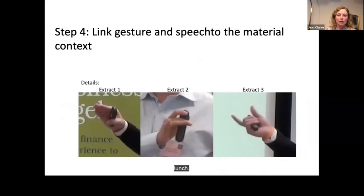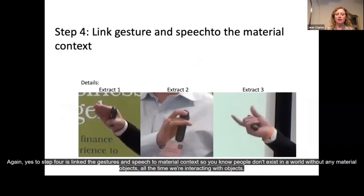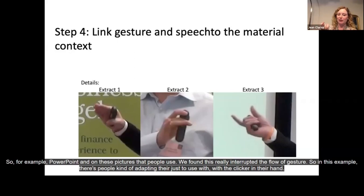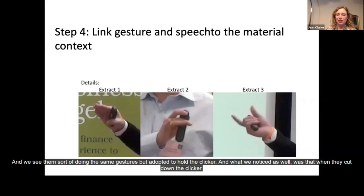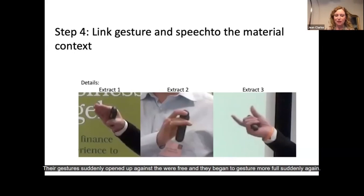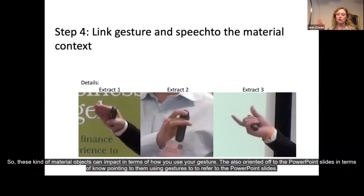Step four is to link the gestures and speech to material context. People don't exist in a world without material objects — we're always interacting with them. For example, PowerPoint clickers really interrupted the flow of gestures. We found entrepreneurs adapting their gesture use with the clicker in hand, doing the same gestures but adapted to hold it. When they put the clicker down, their gestures suddenly opened up again — they were free and began to gesture more fully. These material objects can impact how you use gesture.